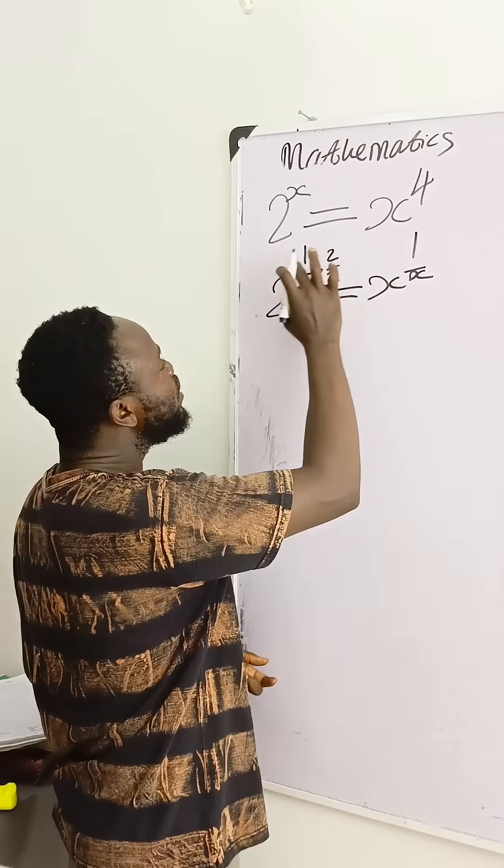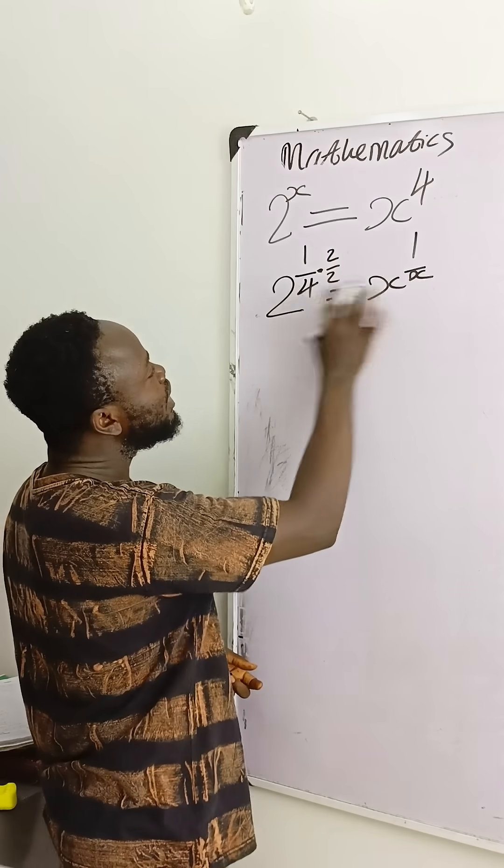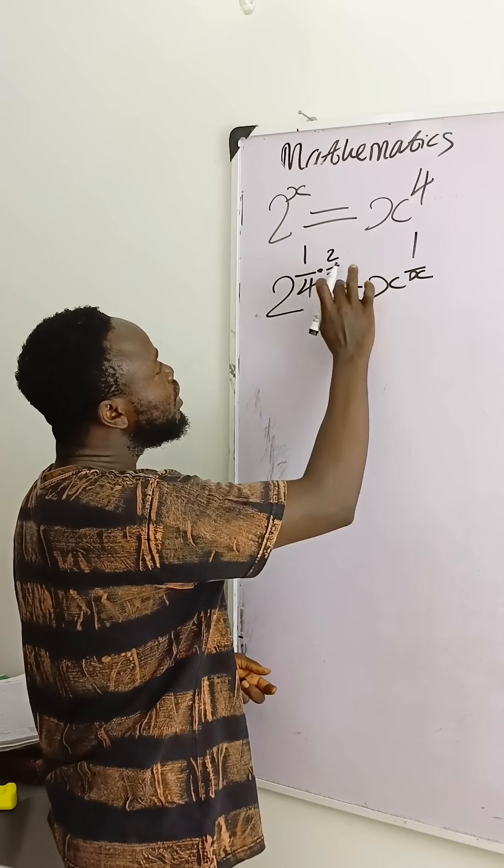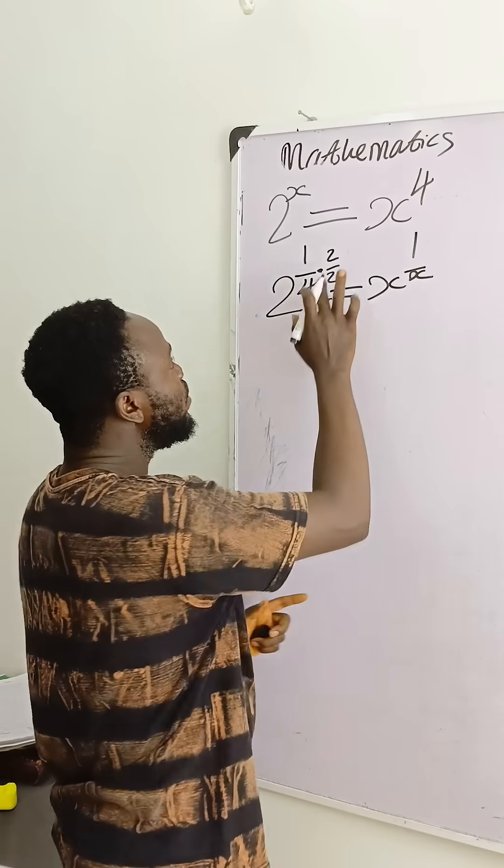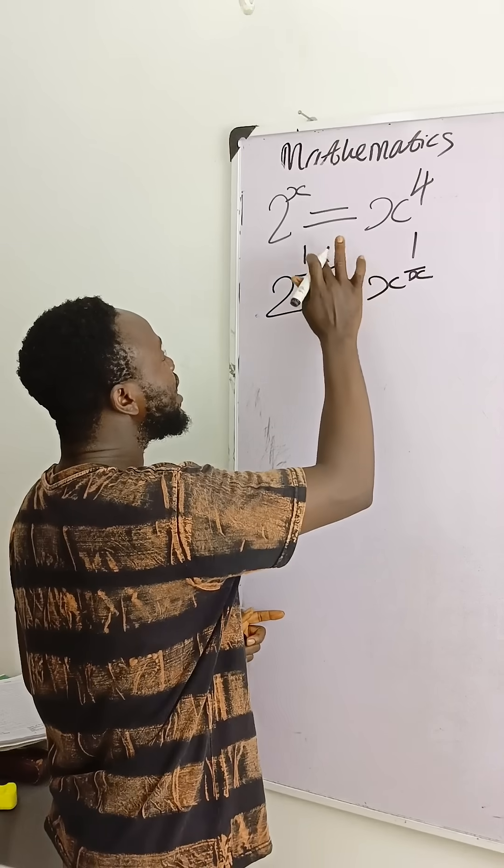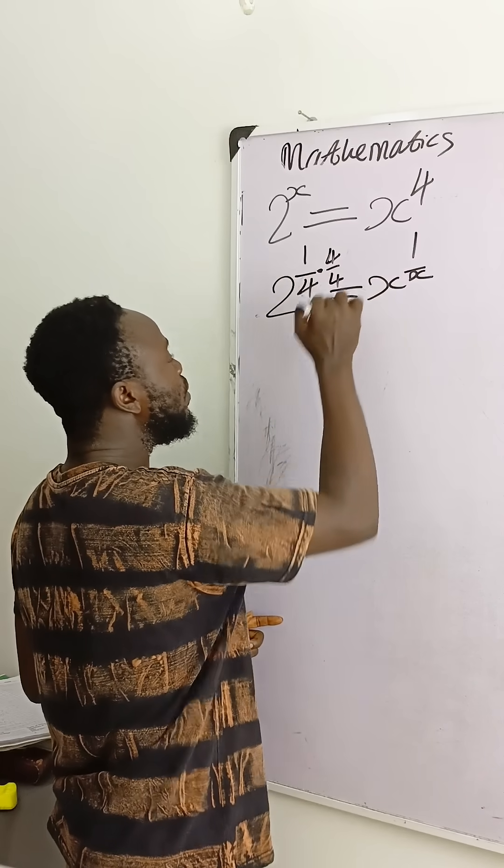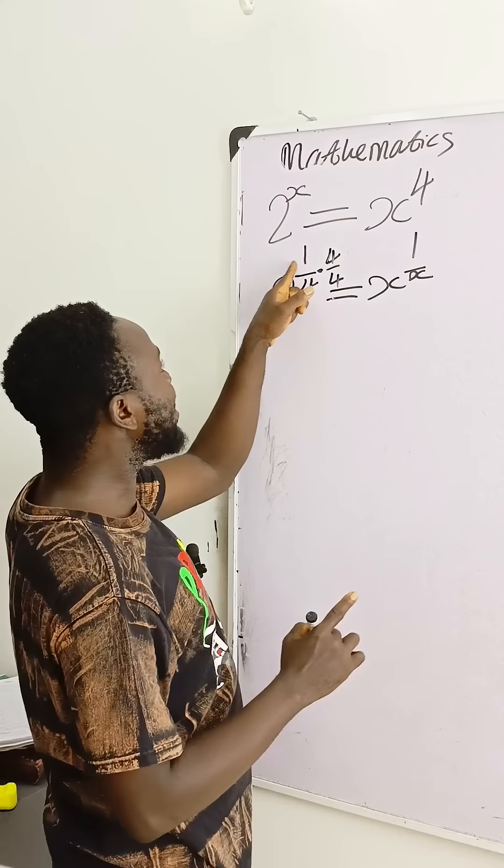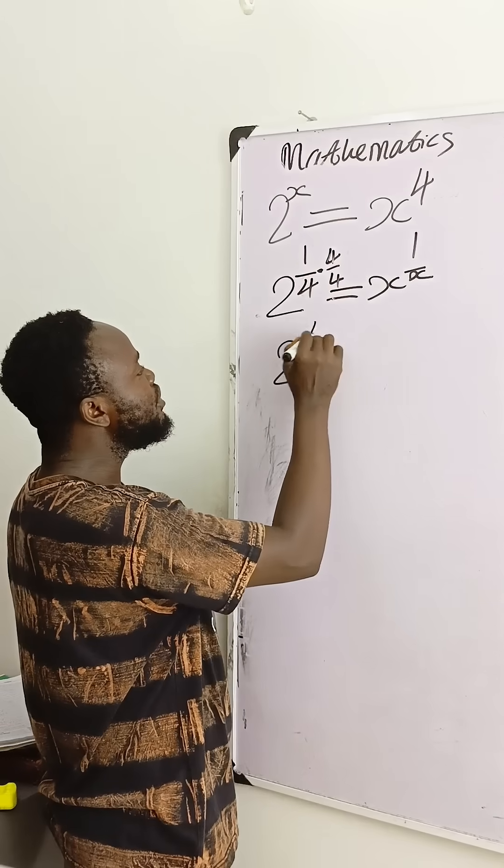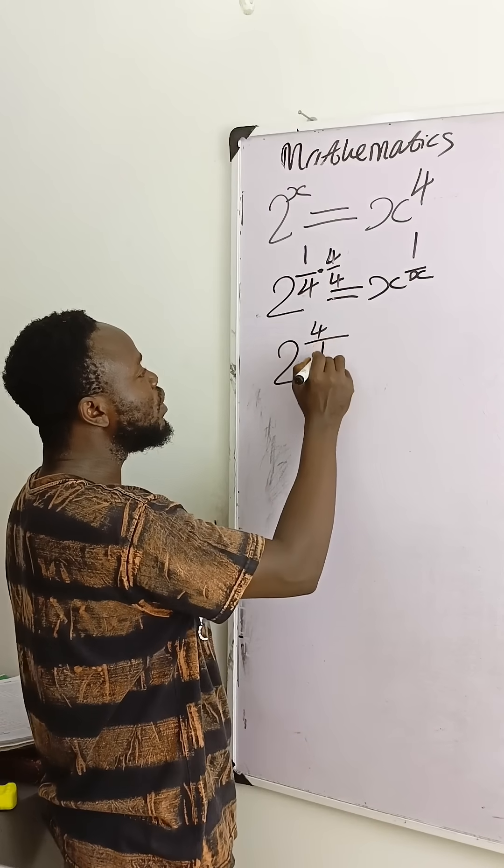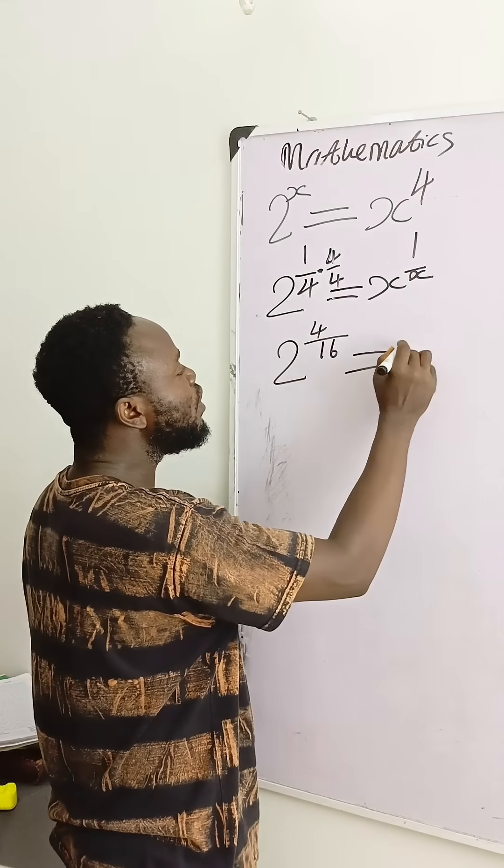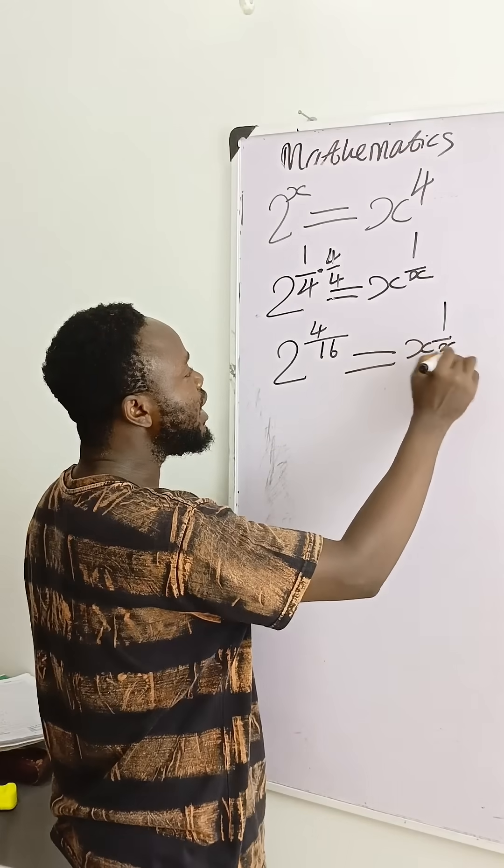Then if I use 2, it will give me something that will be similar to this one. If I try 3 over 3, no way. So what I can use is 4 over 4. Then what do I mean? 1 times 4 will give me 4, over 4 times 4 is what? 16. This is equal to x raised to power 1 over x.